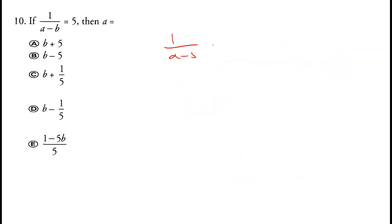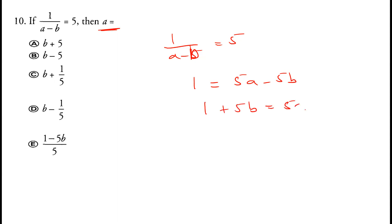Question 10: 1 over (a minus b) equals 5. So 1 equals 5a minus 5b. Solving for a: 1 plus 5b equals 5a, so a equals 1/5 plus b. The answer is a equals b plus 1/5. Option C is correct.